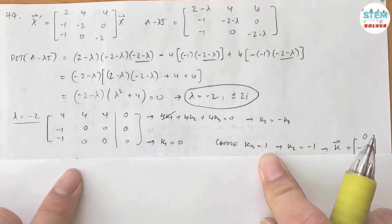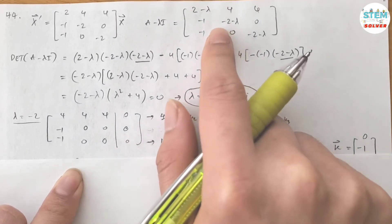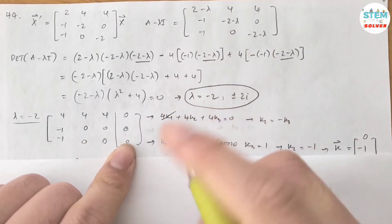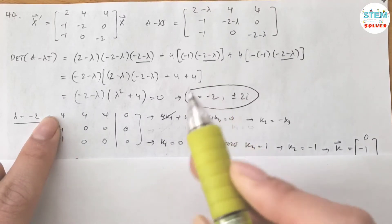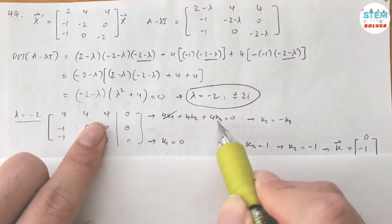When you have lambda equals negative 2, plug it into this one, that gives you this matrix augmented with 0. Okay, so from the third equation I know that k1 is 0. From the first equation, I have 4k1 plus 4k2 plus 4k3 equals 0.